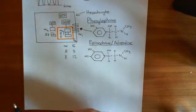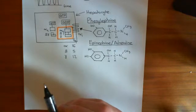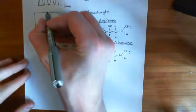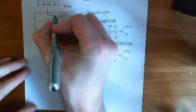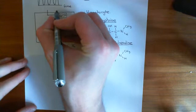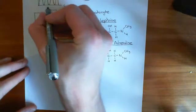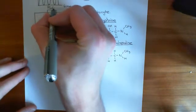What alpha-Q goes and does is it activates an enzyme in the membrane of the cell, which is phospholipase C — specifically phospholipase C beta.